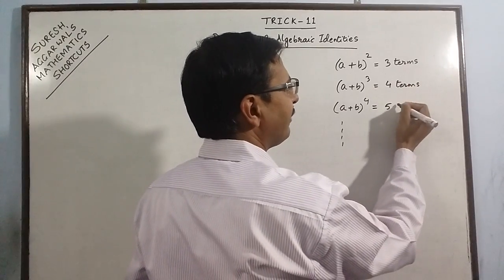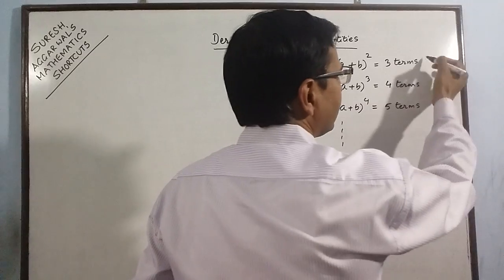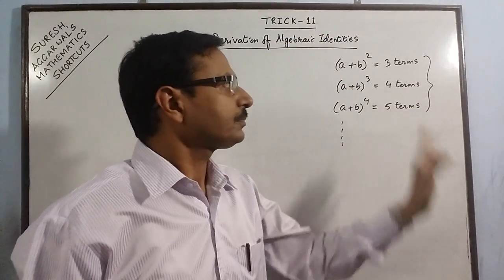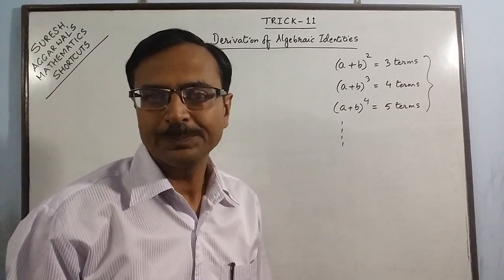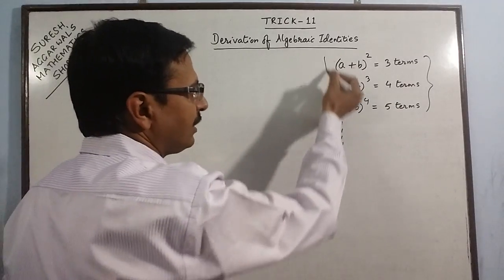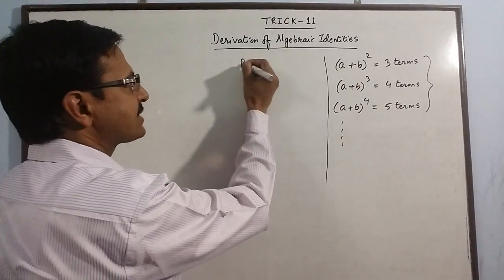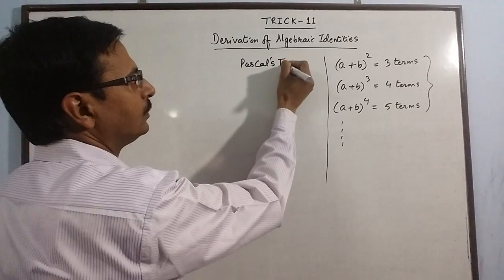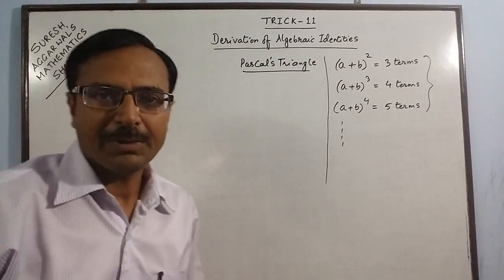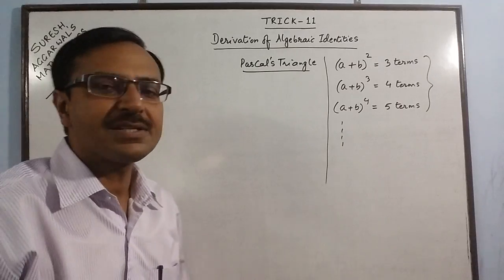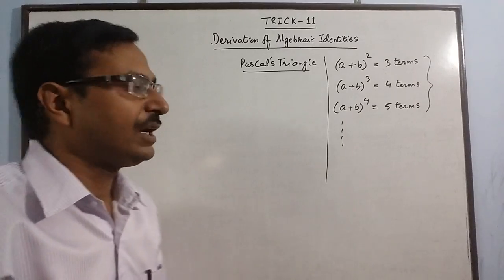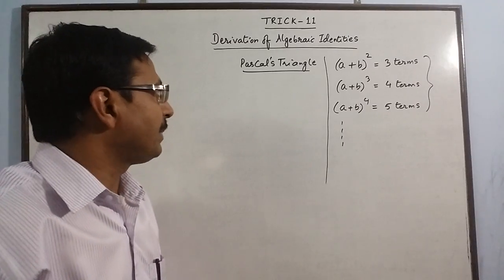If the power is 4, we have 5 terms. This is the relationship between the degree of a polynomial and the number of terms in the expansion. After remembering this concept, the second concept we must know is that of Pascal's triangle. Pascal's triangle is one of the very widely used concepts in mathematics, but unfortunately this concept does not come up to 10th grade. Only in 11th grade, in one of the chapters, Pascal's triangle is mentioned.